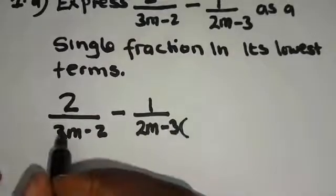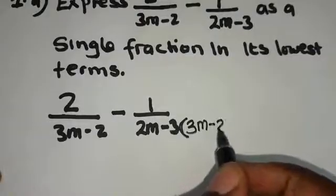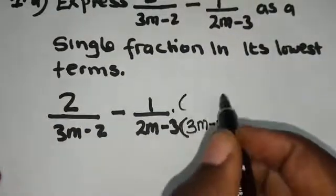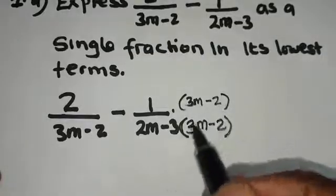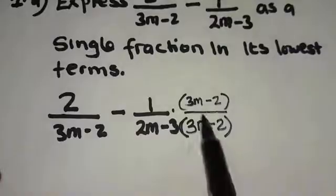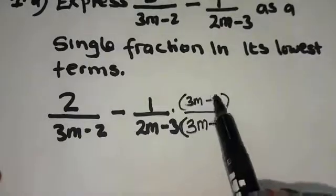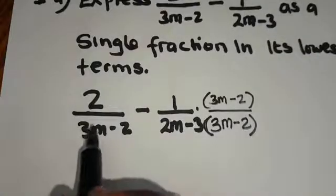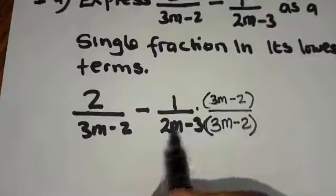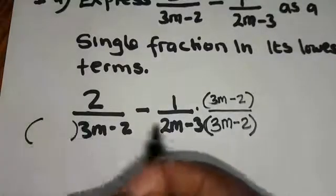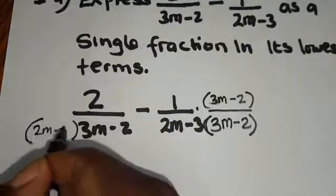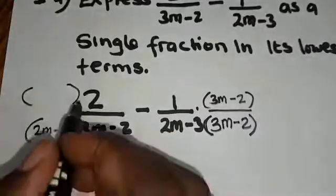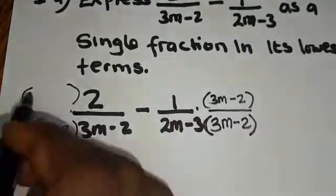We are going to multiply this denominator by this denominator, so we are going to have (3m minus 2). What we have done on the denominator, we also do on the numerator. So we are going to have (3m minus 2) over (3m minus 2). The value of this fraction has not changed because these can easily cancel and you still remain with the original fraction. We also do the same with the first fraction — we are going to multiply its denominator by the denominator of the second fraction, which is (2m minus 3). What we've done on the denominator, we also do on the numerator, so (2m minus 3).